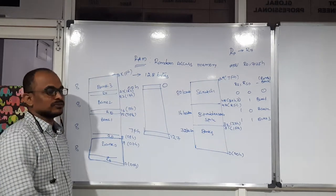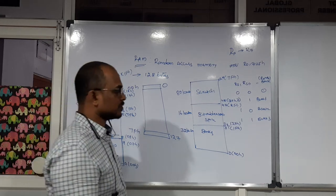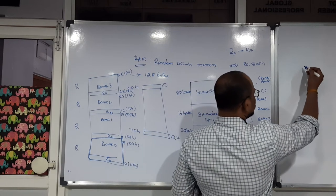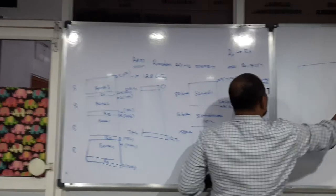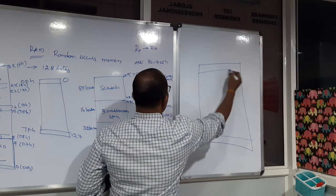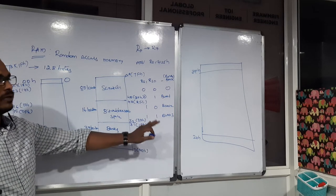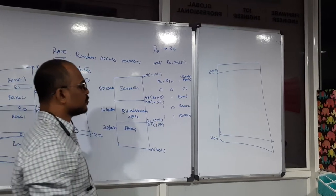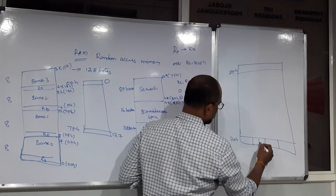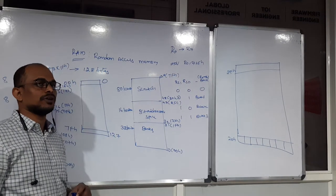The next section is Bit Addressable Space, which has 16 locations in RAM memory. The addresses start from 20H to 2FH, and these locations are specially dedicated for bit addressable space. Bit addressable space means one location is divided into 8 individual bits. This is useful whenever you are working with single-bit operations — for example, when you need single-bit storage.